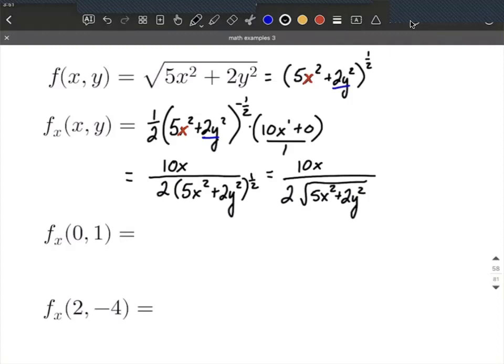Now we have the partial derivative with respect to x, and that's often the biggest challenge. From here, we want to replace our x value with 0 and our y value with 1. Wherever we see an x in the partial derivative, we replace it with 0, and wherever we see a y it gets replaced with 1.